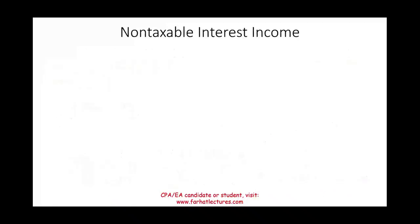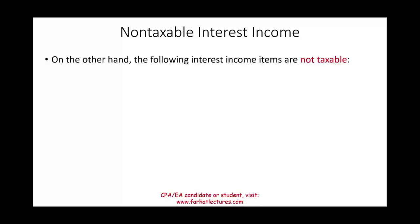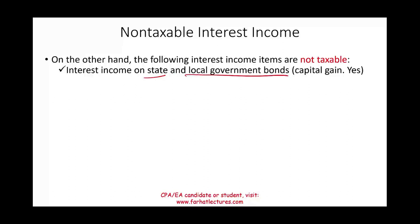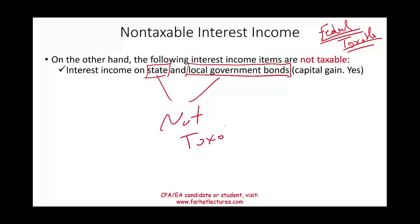There are certain interest income sources that are non-taxable by law. First: interest income on state and local government bonds. Any interest you receive from the federal government is taxable. However, if you lend your money to the state government or your local government — such as a municipality or county — the interest on those bonds is not taxable. Understanding why helps you remember this rule.